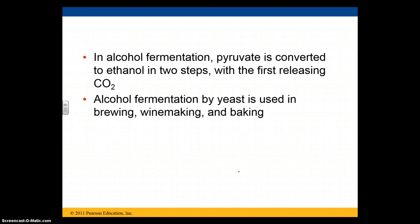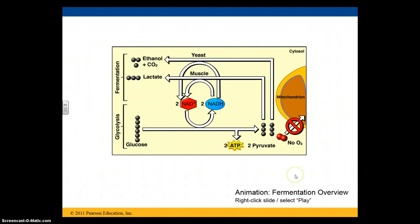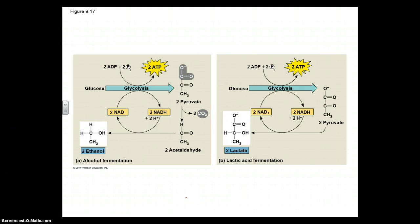In alcohol fermentation, pyruvate is converted to ethanol — the same thing as ethyl alcohol — in two steps, and CO2 is released. We can use this type of fermentation to brew things like beer or make wine, and it's also used in baking. As you can see in the diagram, glucose goes in and ethanol comes out, so this is what you would use for winemaking.